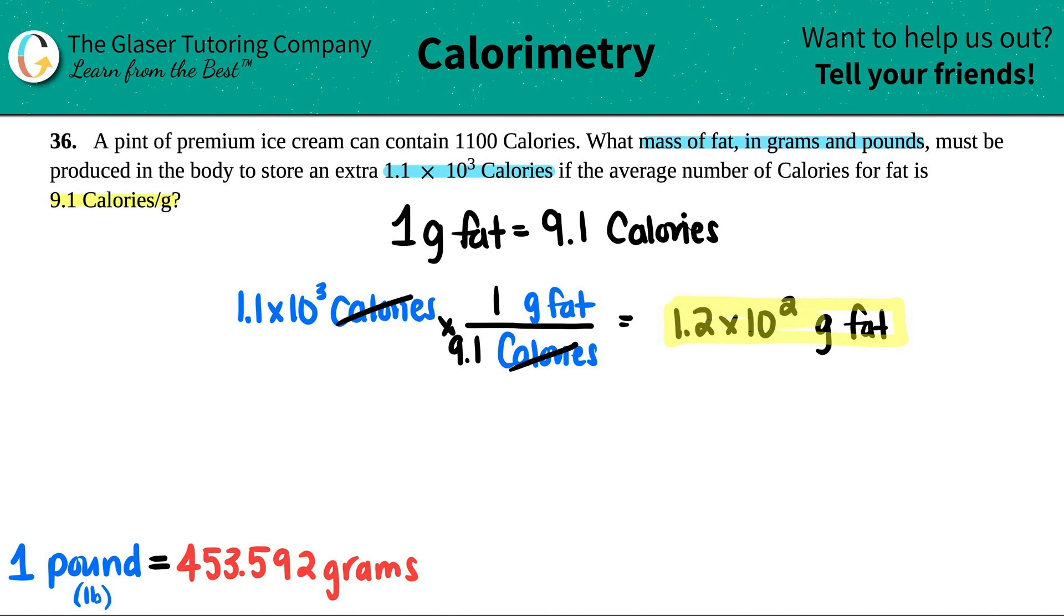Now we just have to convert this amount of grams of fat into pounds. Here's my conversion: one pound equals 453.592 grams. Let's start with what we're given: 1.2 times 10 to the second grams of fat.